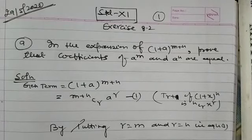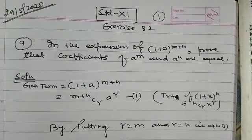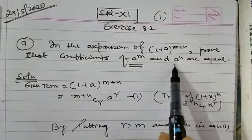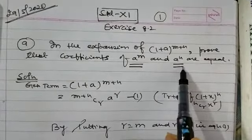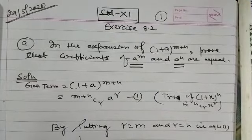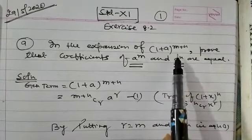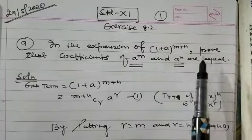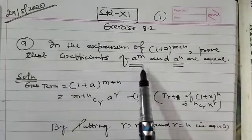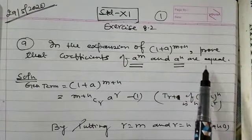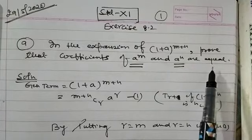In the expansion of (1 + a) to the power (m + n), prove that the coefficient of a to the power m and a to the power n are equal.